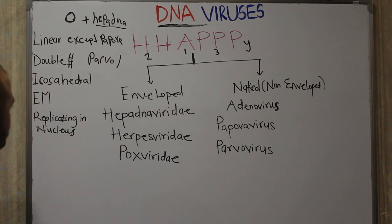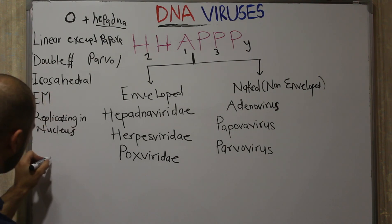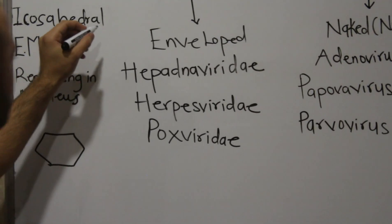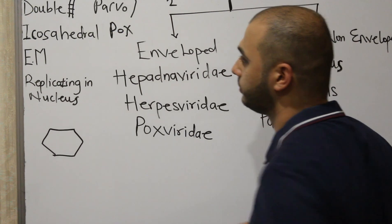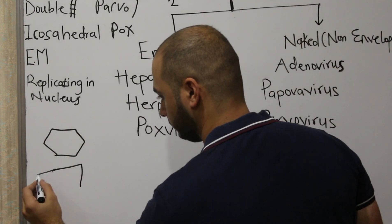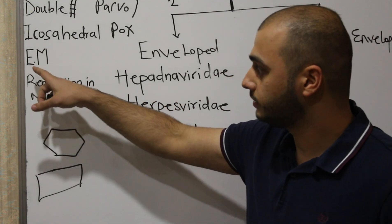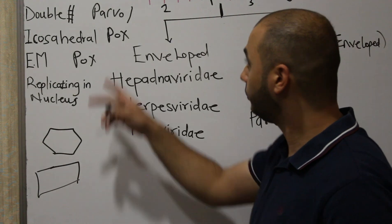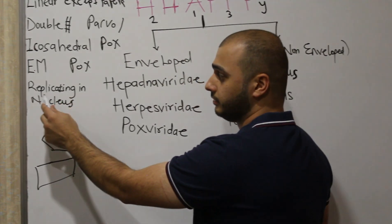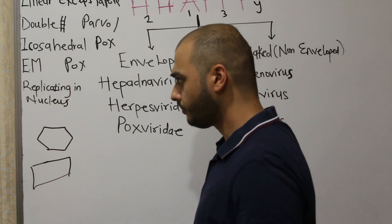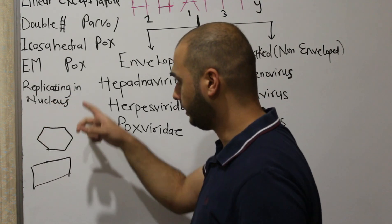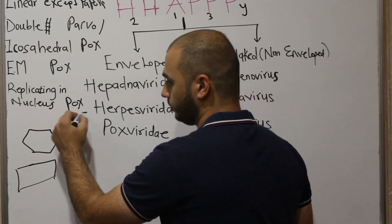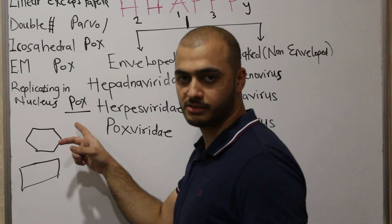All DNA viruses have an icosahedral shape — like a benzene ring if you draw it in 2D — except Poxvirus, which has a brick shape. All of them are visible only under the electron microscope except Poxvirus, which is the biggest virus. All of them replicate in the nucleus, due to lack of DNA-dependent RNA polymerase, except Poxvirus, which replicates inside the cytoplasm.